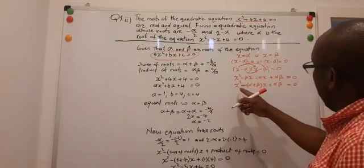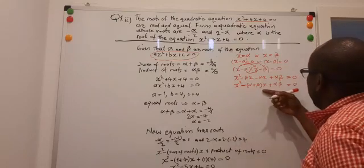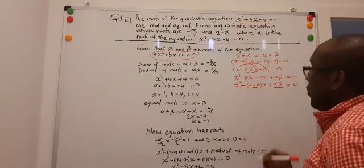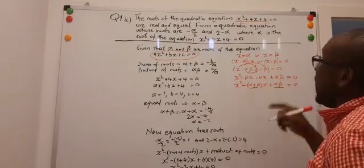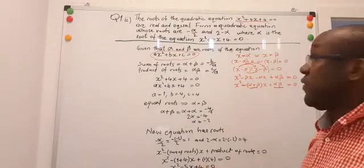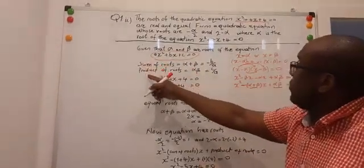Actually, so we see that if I'm given the roots of an equation as α and β, then the quadratic equation will be obtained by looking for the sum of the roots and the product. And once I have that, I can just substitute into this and I have the quadratic equation. So, the roots are actually able to build the equation.